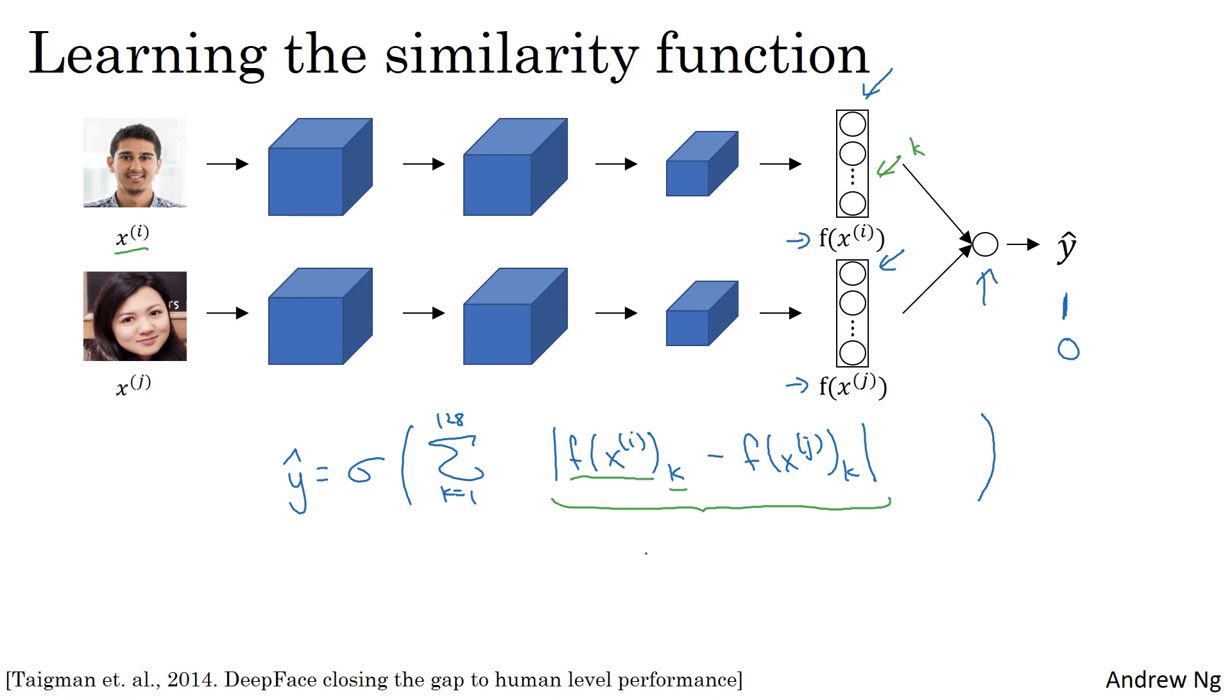What you might do is think of these 128 numbers as features that you then feed into logistic regression, and your final logistic regression can have additional parameters w i and b, similar to a normal logistic regression unit. You would train an appropriate weighting on these 128 features in order to predict whether or not these two images are of the same person or of different persons.